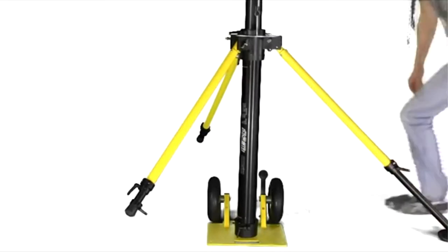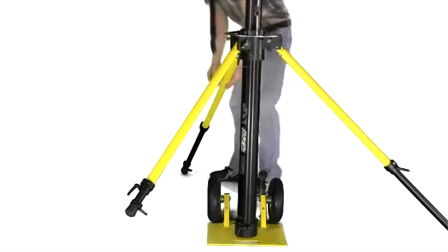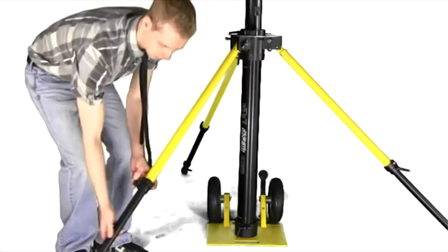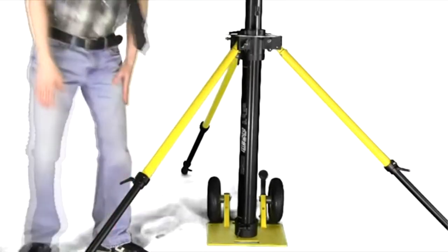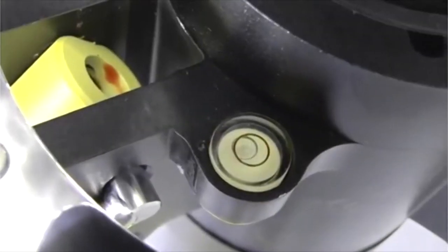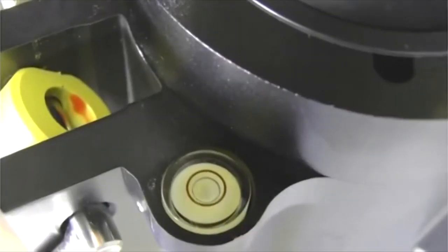At this point in the setup, you can extend the Hi-Pod legs to their full length. Lock them loosely as you will most likely need to adjust them in the next step. Check the bubble on the top of the Hi-Pod base to ensure that your legs are set evenly. Adjust the legs to make them level and check the bubble again.